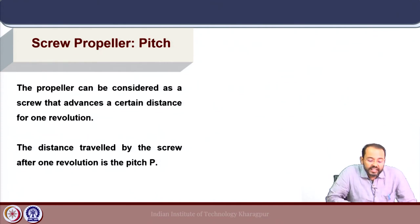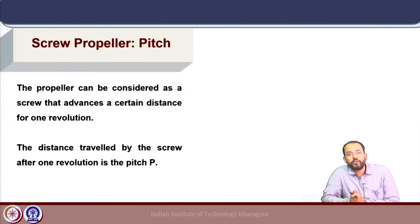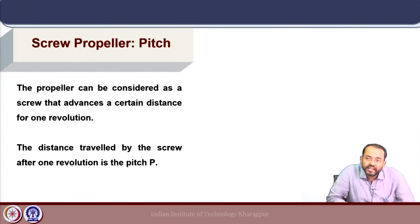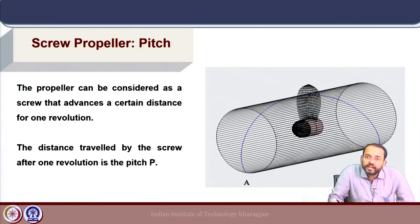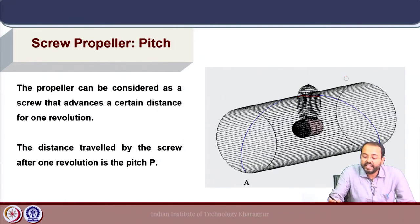A screw propeller can be considered as a screw that advances a certain distance per one revolution. The distance travelled by the screw after one revolution is called the pitch, which is also used for the helix. Each propeller blade, when intersected on the surface of a cylinder, traces a helical path.